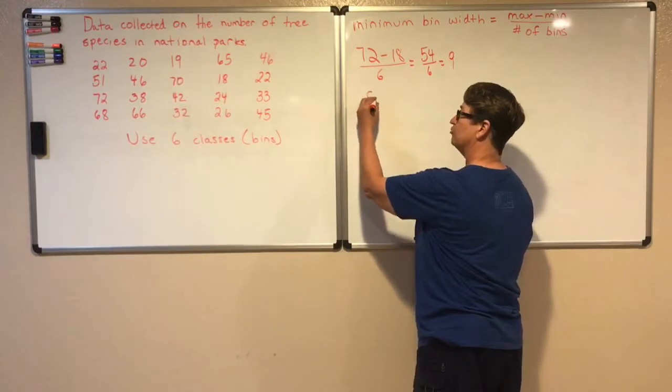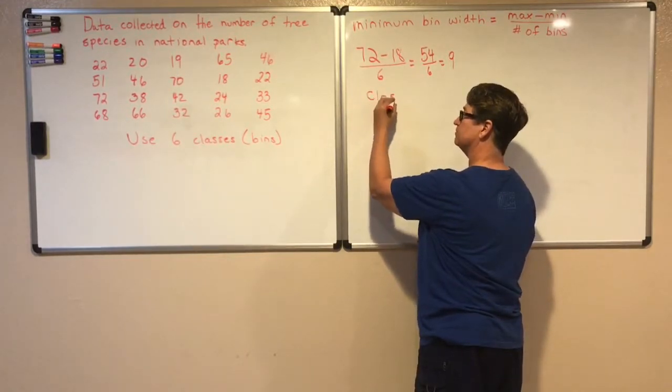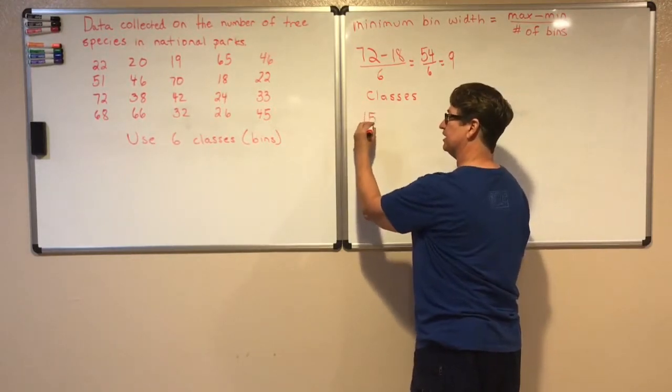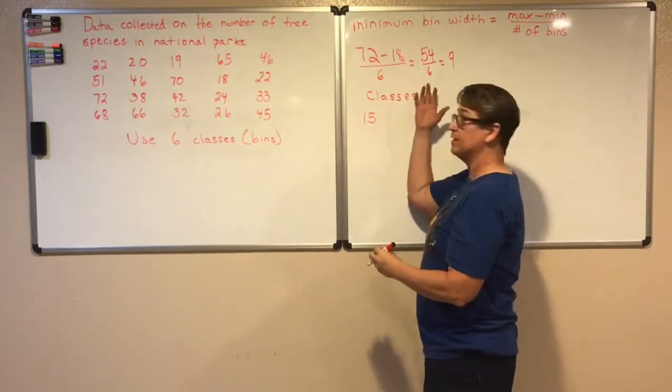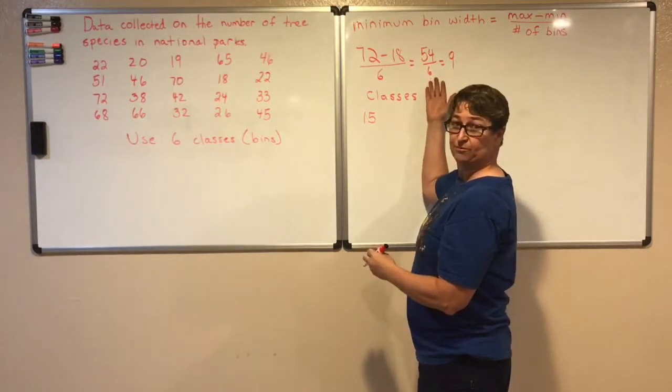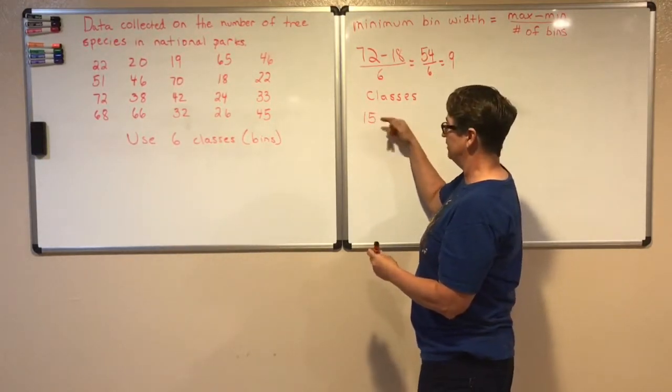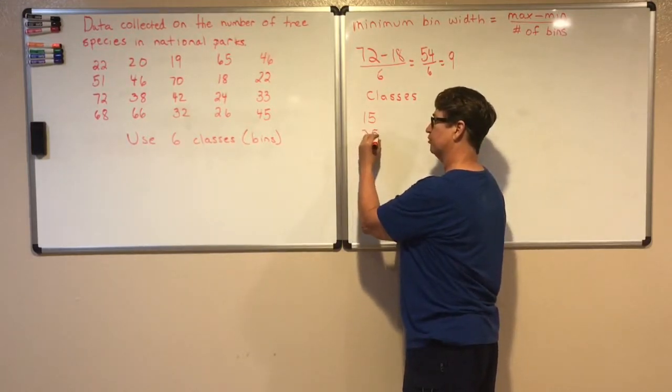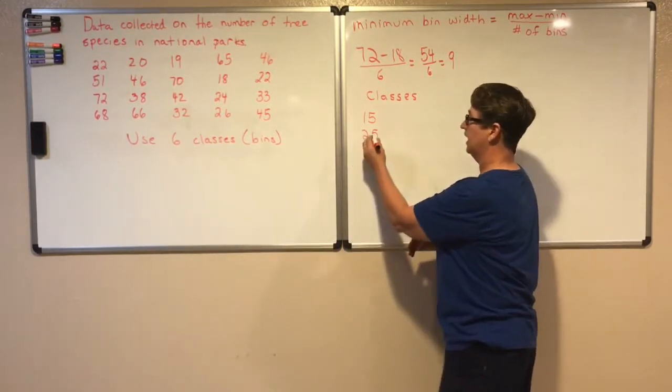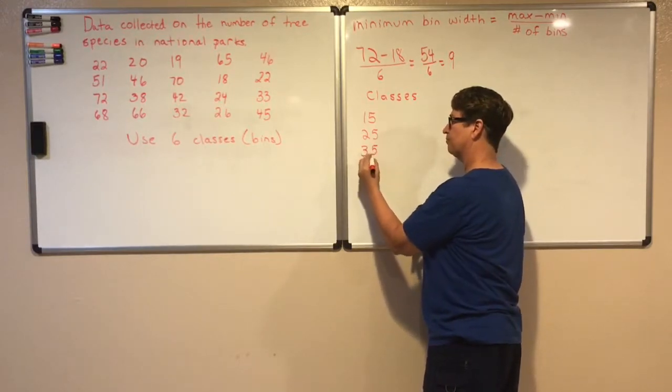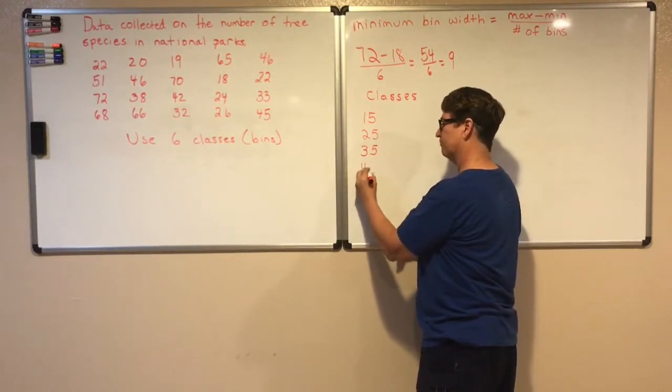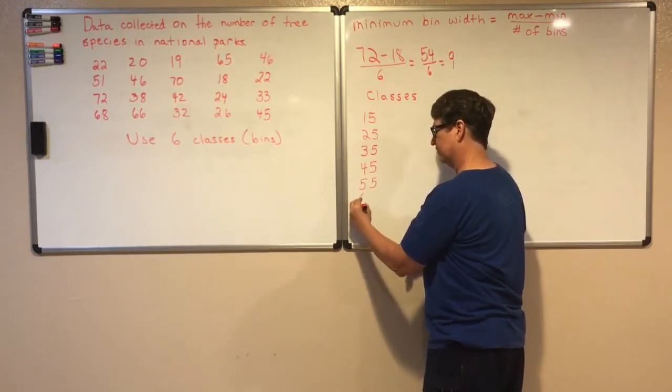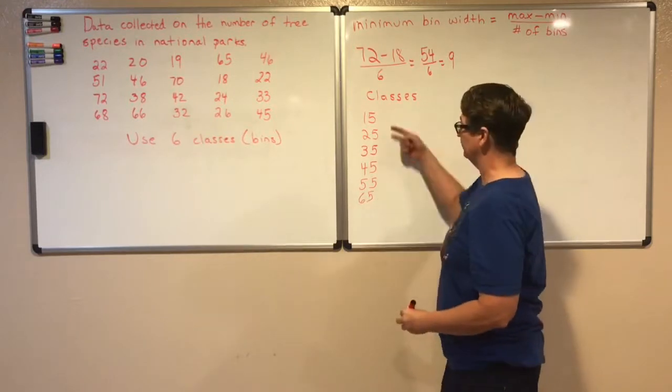So as we begin to make our classes using all that information I'm going to take that 15 and then I'm going to take my bin width of 10 and I'm just going to count by tens. So here's 15 and then I've got 25 would be my next beginning of the class. Then 35, 45, 55, and 65. And that should give me six classes.